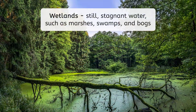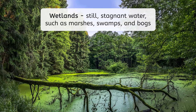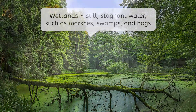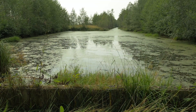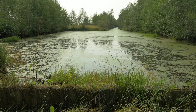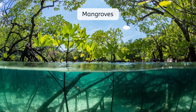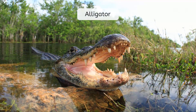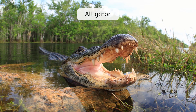On the opposite extreme, we have wetlands with very still or stagnant water. Biomes such as marshes, swamps, and bogs make productivity difficult because the waterlogged soil leads to less available oxygen. You will find plant species such as duckweed and mangroves here, and animals such as alligators, crocodiles, and many bird species.